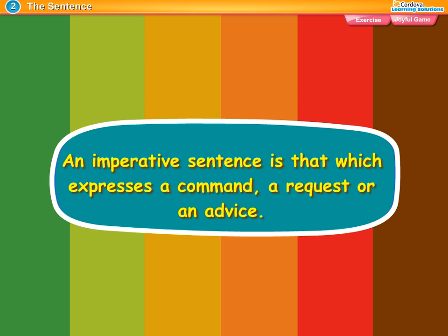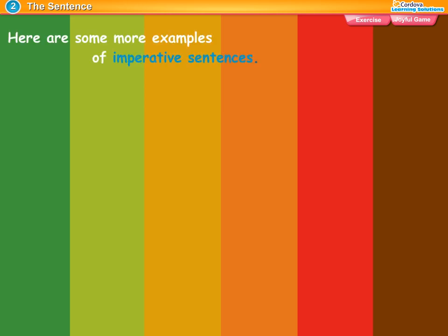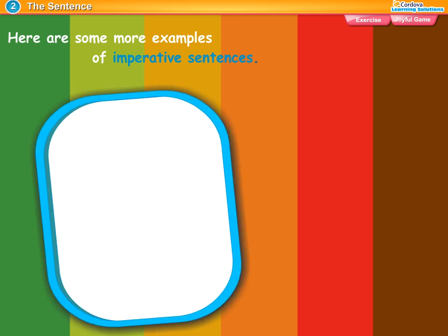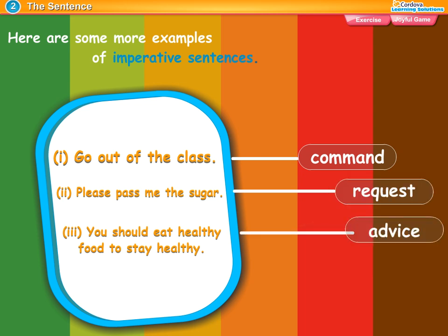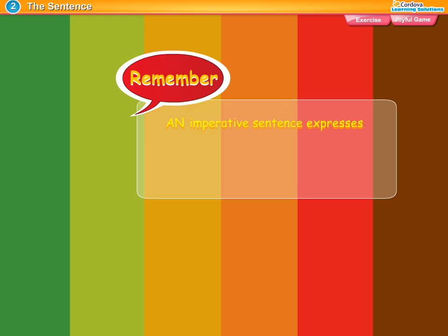An imperative sentence expresses a command, a request, or advice. More examples: 'Go out of the class' — command. 'Please pass me the sugar' — request. 'You should eat healthy food to stay healthy' — advice. Remember: an imperative sentence expresses a command, a request, or advice, and ends with a full stop.